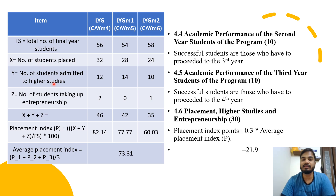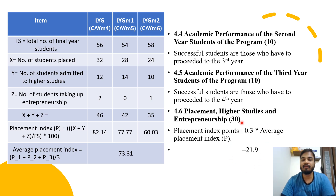For LYG M2: 24 placed, 10 higher studies, 1 entrepreneur. Combining the numbers for LYG, LYG M1, and LYG M2 and applying the formula — Placement Index = (X + Y + Z) / FS × 100 — gives placement index percentages for each year. The average placement index across three years is 73.31. Applying the formula: 0.3 × 73.31 = 21.9 marks out of 30 for section 4.6 on placement, higher studies, and entrepreneurship.